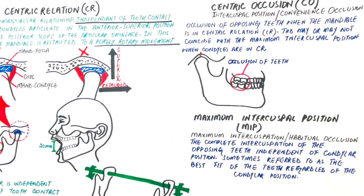It may or may not coincide with maximum intercuspation. And lastly, the maximum intercuspation is independent of the bone and it's all related to the teeth. It is the most intimate contact between teeth of both jaws. It is the best fit for upper and lower teeth, and again, it's independent of condylar position.